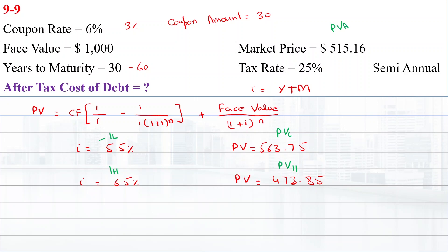IRR equals IL plus [(IH minus IL) times (PVL minus PVA)] divided by (PVL minus PVH).